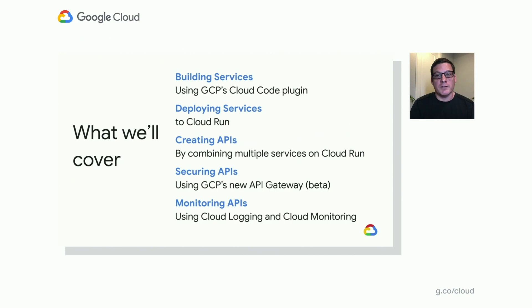There are going to be five things we're going to look at today. We're going to start off by looking at how we can build services. We're going to use the Cloud Code plugin that GCP provides to developers to make it easy to get started with GCP development. We're going to look at how we can deploy those services to Cloud Run, and then how we can combine multiple services together to form an API using GCP's brand new API Gateway, which was just announced in beta. Once we have that API created, we're going to see how we can secure that API. And finally, we're going to take a look at how we can monitor that API using Cloud Logging and Cloud Monitoring so that if anything's not working the way we expect, we can get alerted to that fact.